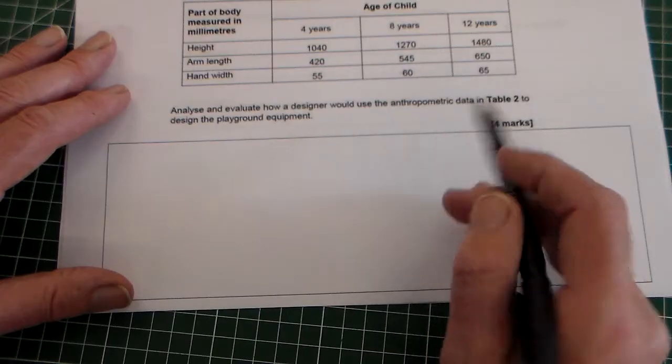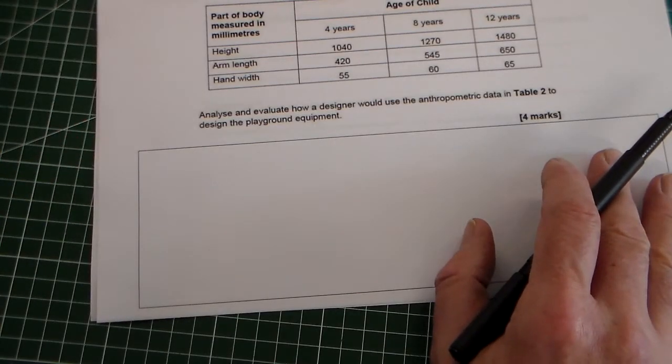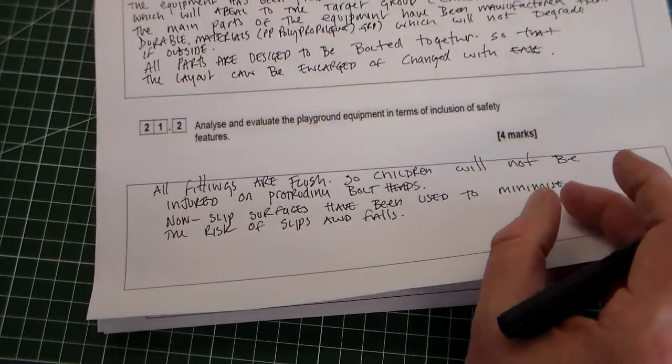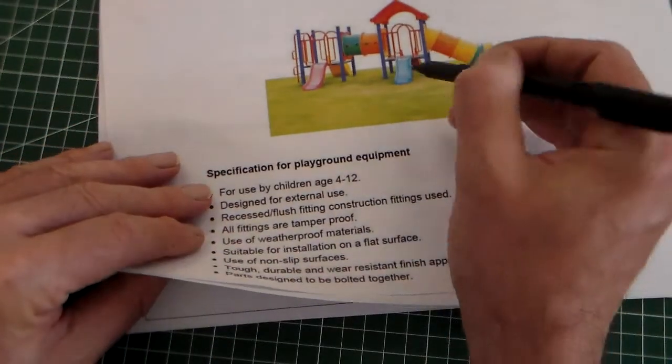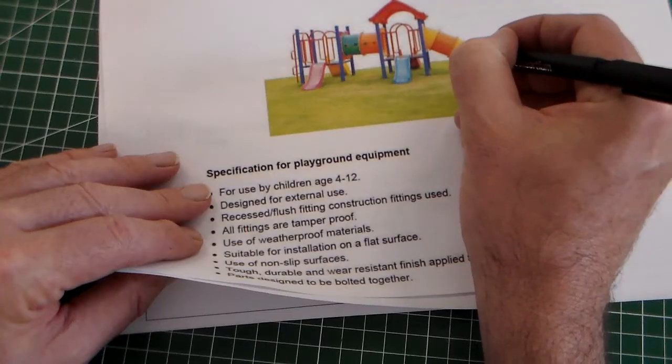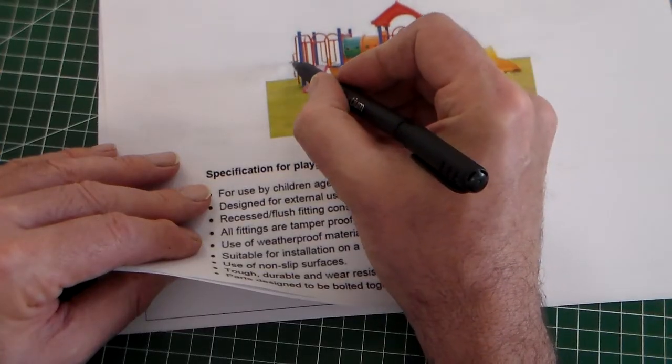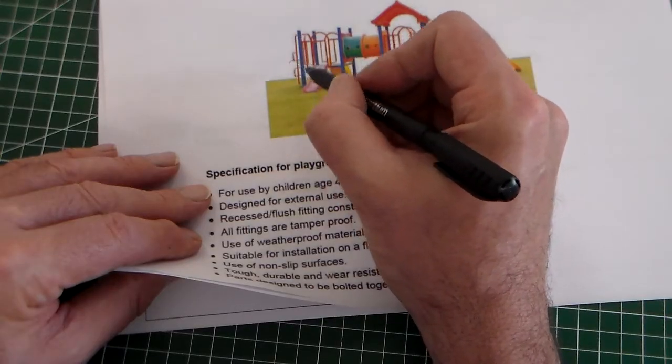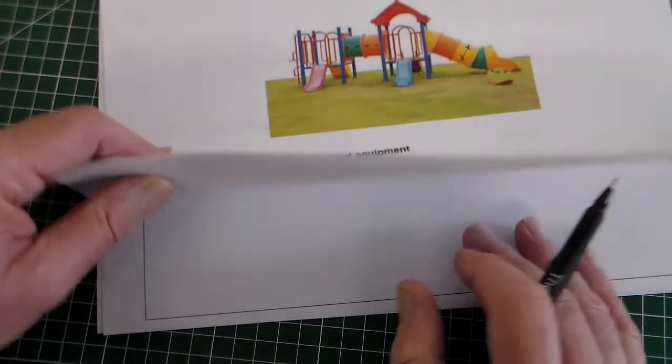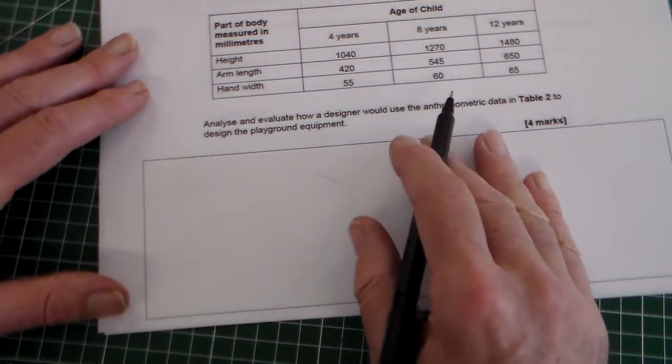Analyze and evaluate how a designer would use the anthropometric data in table two to design the playground equipment. So if we just take a quick look back. Things we've got obviously this diameter here would be one thing. You've got steps here. You've got climbing bars at the back here and hand holds. And all these things would be dependent on this data here.